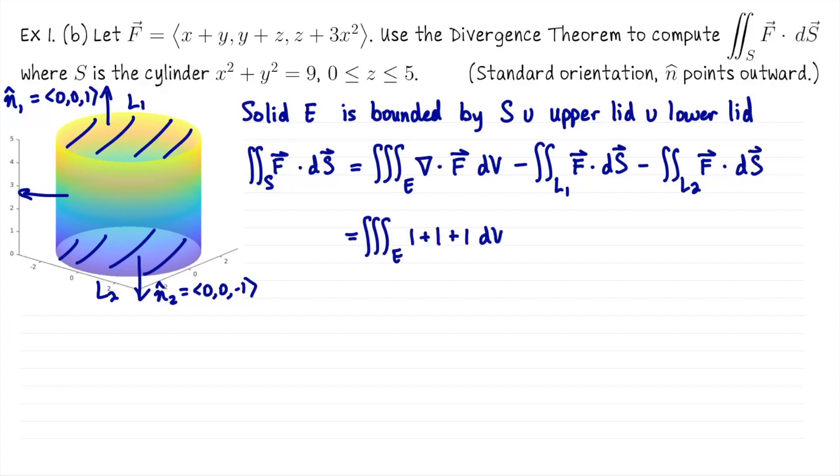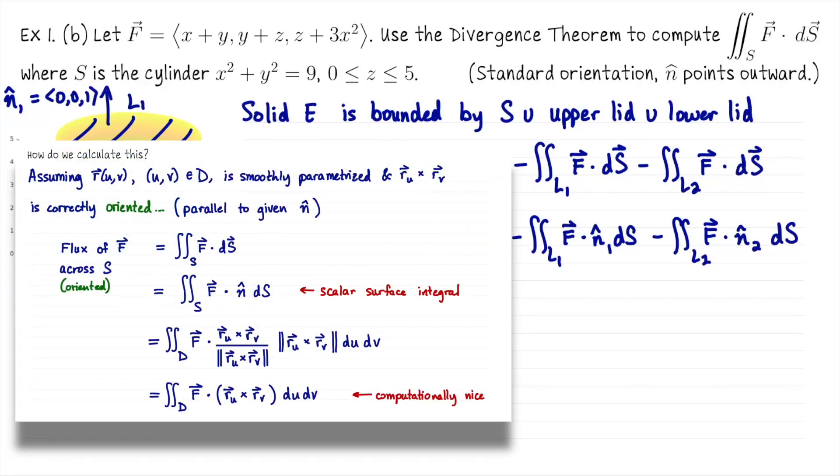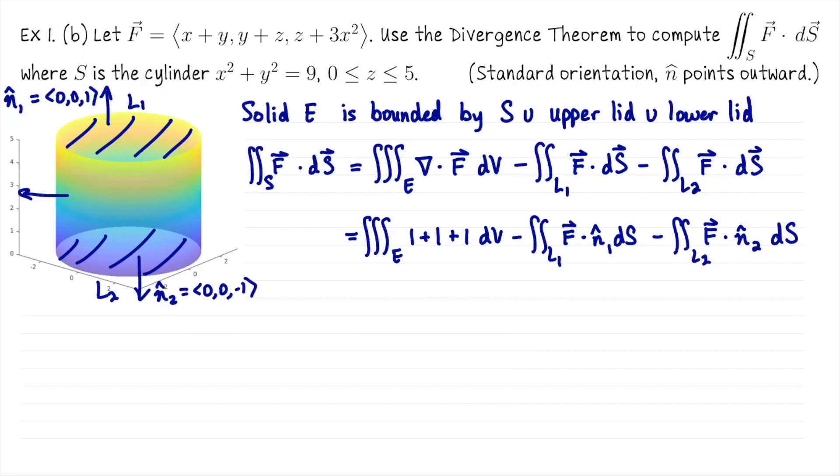Now we just need to set up and solve these three integrals. The first one is easy. The divergence of this vector field is actually just 3, so it's going to be 3 times the volume of the cylinder. For L1 and L2, I'm going to use an alternative form for the vector surface integral: F·dS can be computed as F·n̂ dS, where n̂ is a unit normal vector and this is now a scalar surface integral. This change is not obligatory for this problem. I just like this change because it's so easy to write down n1 and n2.